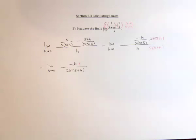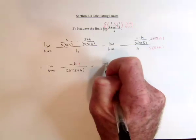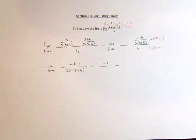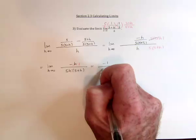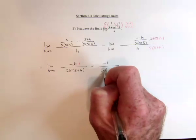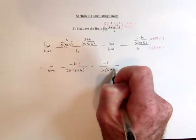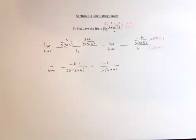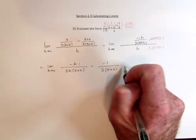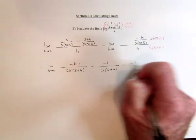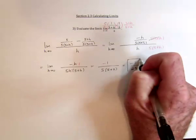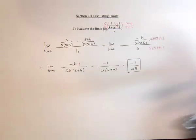And after that, we should be able to substitute h equals 0. So we've got negative 1 over the 5, and that h got cancelled. And then the parentheses, it would be 5 plus 0. So it's a grand total of negative 1 over 25, negative one 25th.